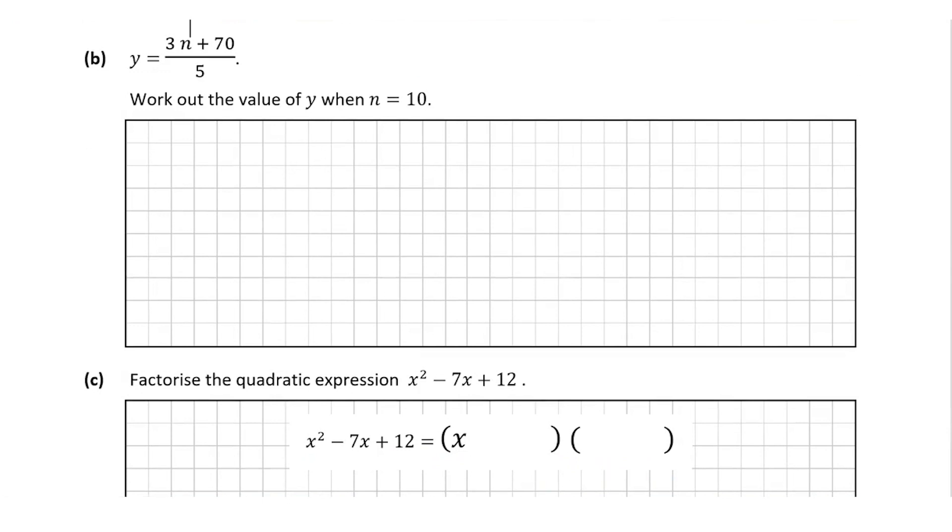Now for question B, we're told that y is equal to 3n plus 70 all over 5 and we're asked to work out the value of y when n is equal to 10. So let's just fill in 10 instead of n. So y is equal to 3 by 10 plus 70 all over 5. So we know that 3 by 10 is 30 plus 70 divided by 5. 30 plus 70 is 100 divided by 5 and 100 divided by 5 is 20. You can use your calculator for this if you're not sure. So y is equal to 20 and that's our answer for question B.